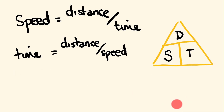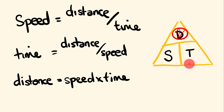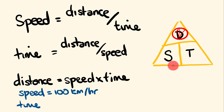Now let's look at working out distance calculations. Using the triangle, put your thumb over 'distance' and you can see distance equals speed multiplied by time. Here's an example: an object moves at a speed of 100 kilometers per hour for a time of 30 minutes. A caution here — we have 100 km/h dealing in hours, but the time is in minutes. These units don't match up, so before calculating we need to convert the time into hours.